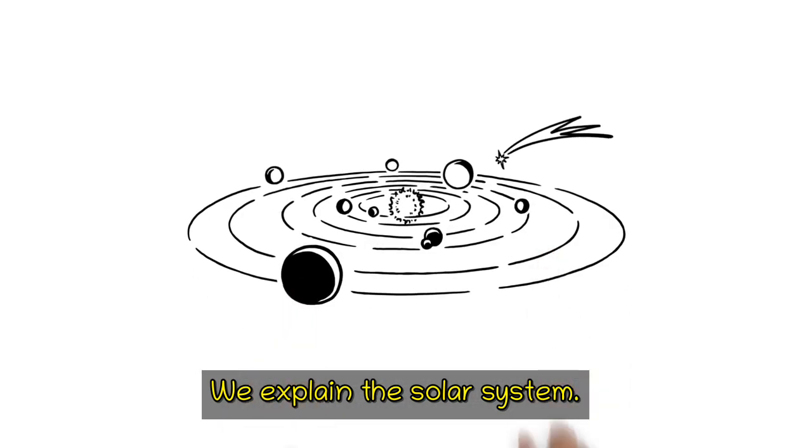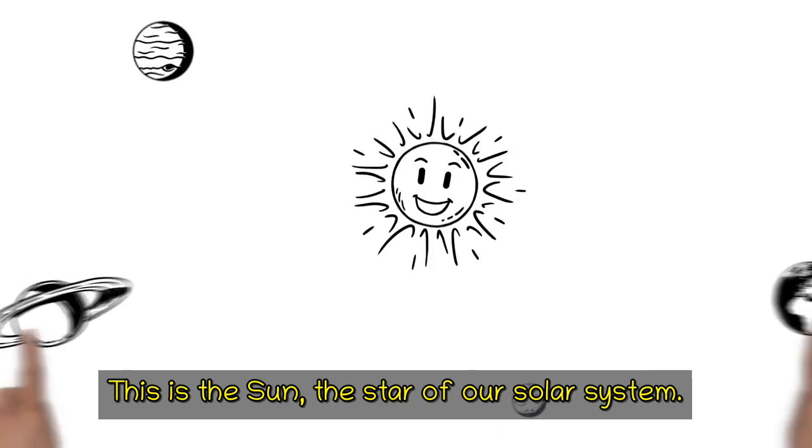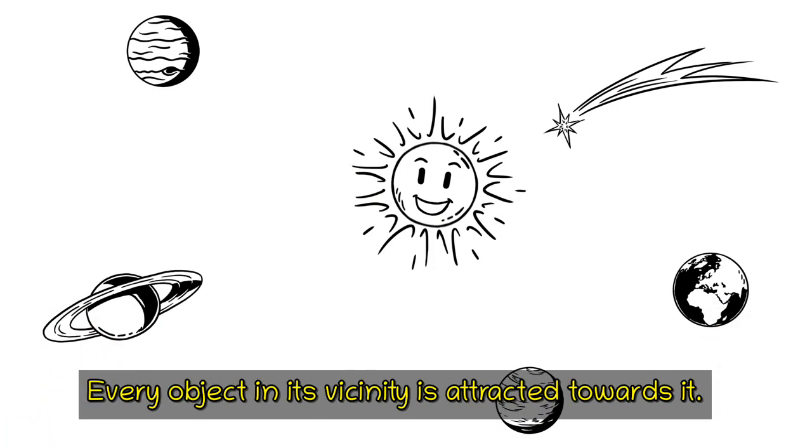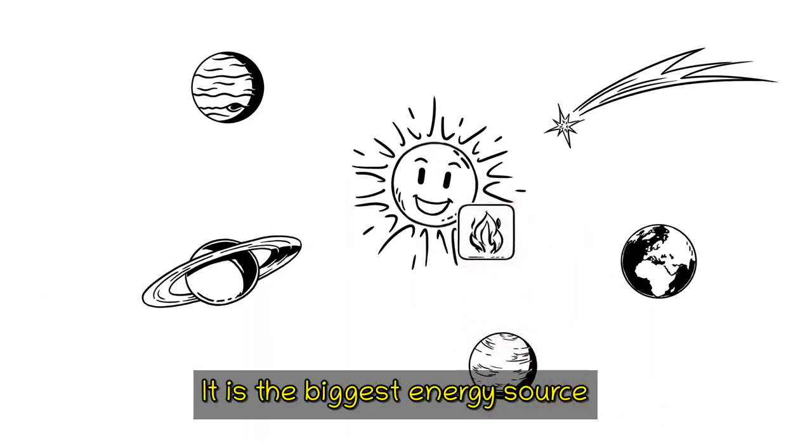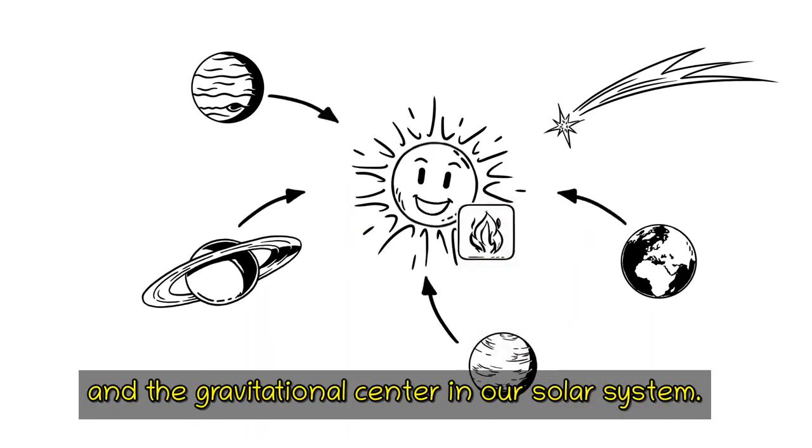We explain the solar system. This is the Sun, the star of our solar system. Every object in its vicinity is attracted towards it. It is the biggest energy source and the gravitational center in our solar system.